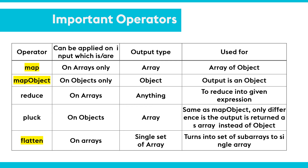In the exam, you mostly won't see questions on reduce or pluck. Reduce is applied on arrays and reduces the array list to a given expression. Pluck is used on objects — it is similar to mapObject, but if you want your output as an array, you use pluck instead of mapObject because your output needs to be an array. Flatten, which we've seen used inside scatter-gather, is applied on arrays — we used to get multiple different arrays and wanted to merge them. Flatten turns multiple sub-arrays into a single array. From an exam perspective, map, mapObject, and flatten are the most important to remember.